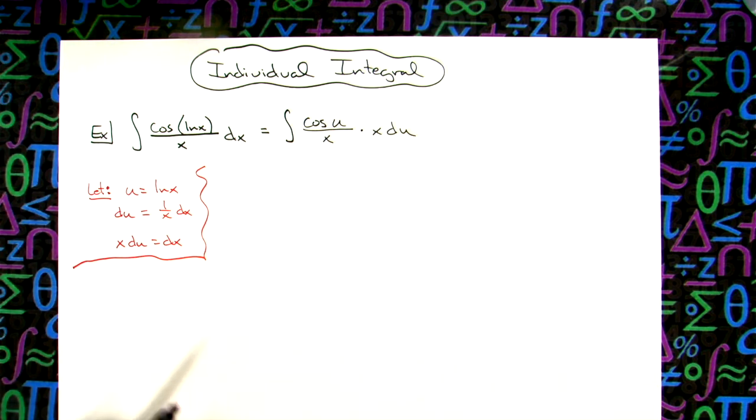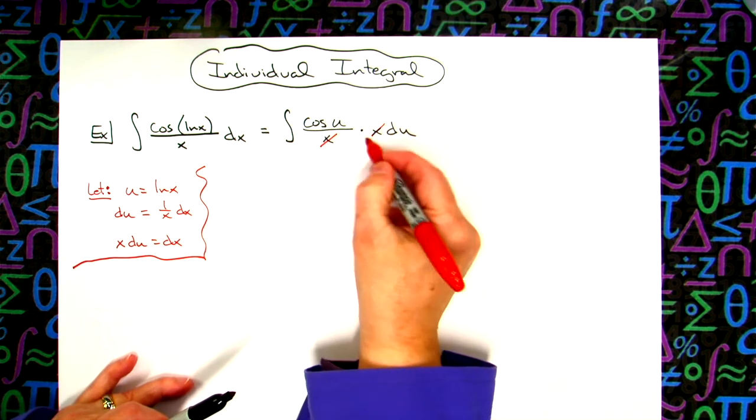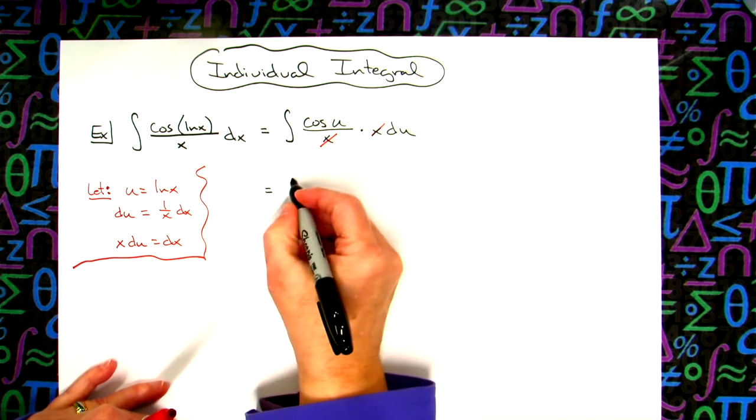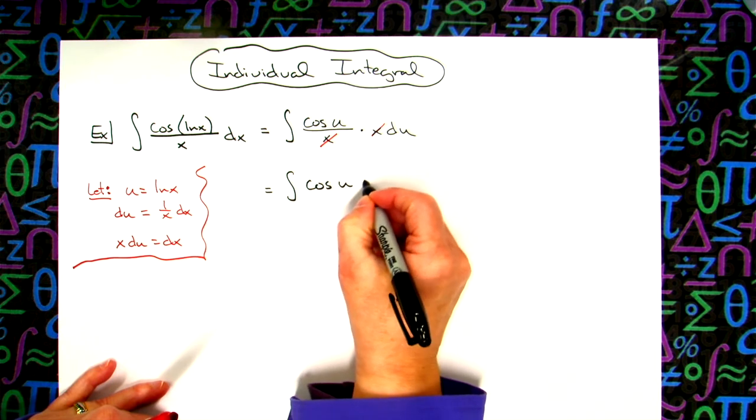All right, what that allows us to do then is cancel out the two x's. This x is in the numerator, this x is in the denominator. That's going to get us down to the integral of cosine u du.